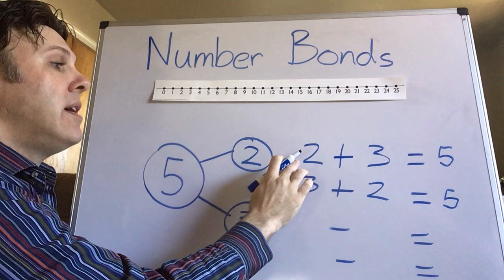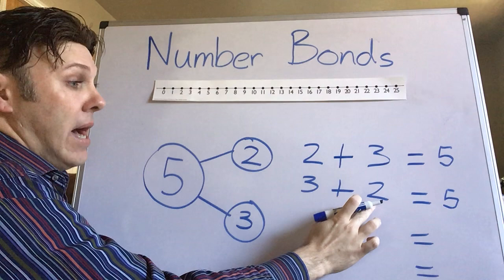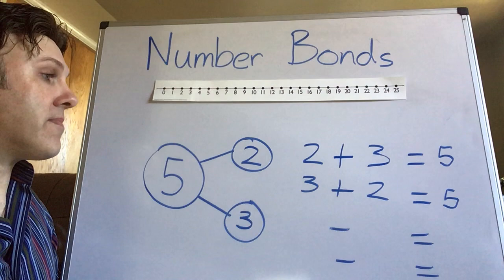So here's an example. If I had two apples and somebody gave me three apples I would now have five apples. Or I could have started with three apples. Someone gave me two apples and I got five apples. Two different ways to do the addition.